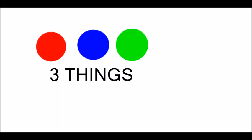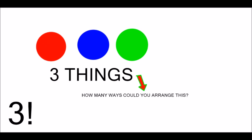Imagine you have three things, and you want to find out how many different ways you could arrange them. So you'd do three with that exclamation point, or the factorial for three.